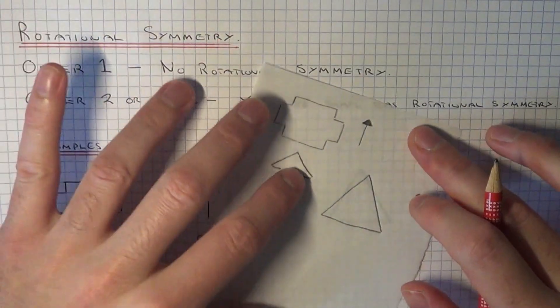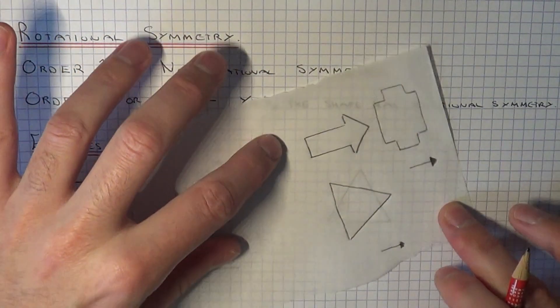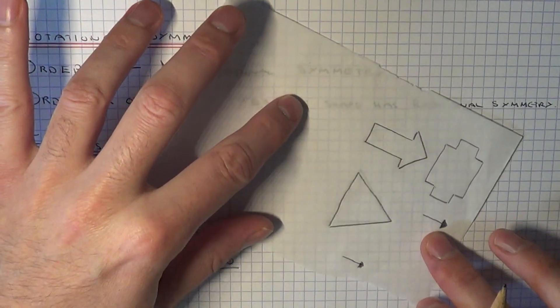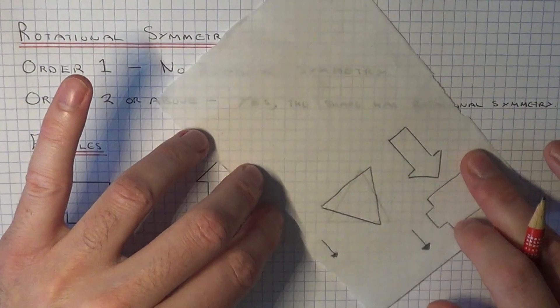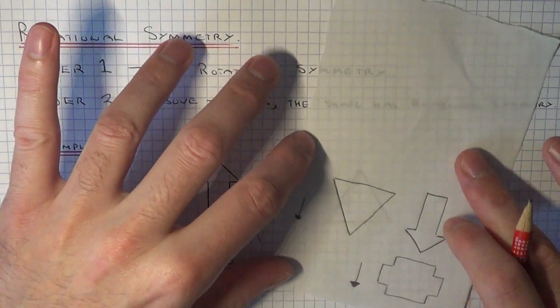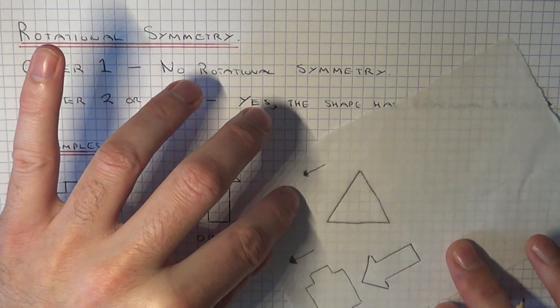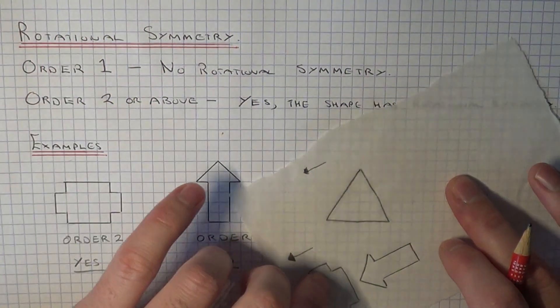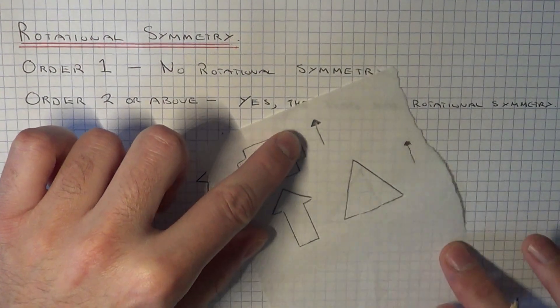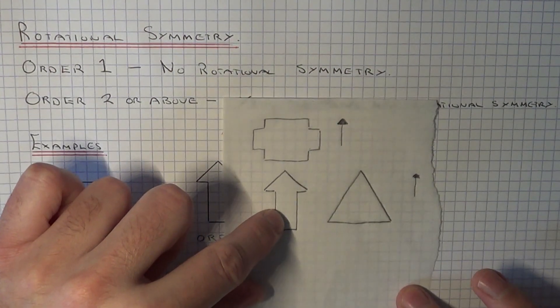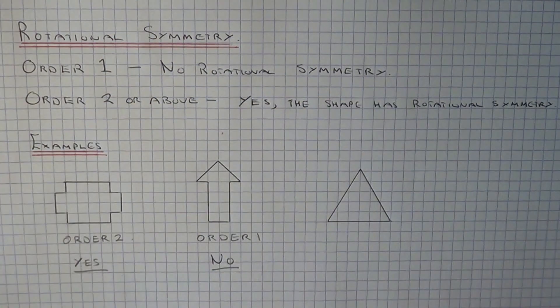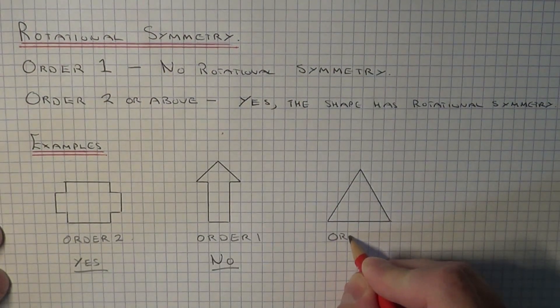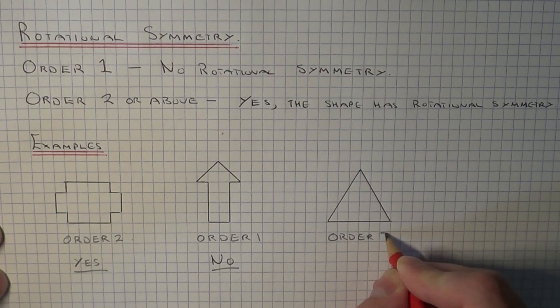Okay, so let's turn it. There we go. So that's one. There we go again. That's two. And then we're back at the start. So that's three. So the order of rotational symmetry is three.